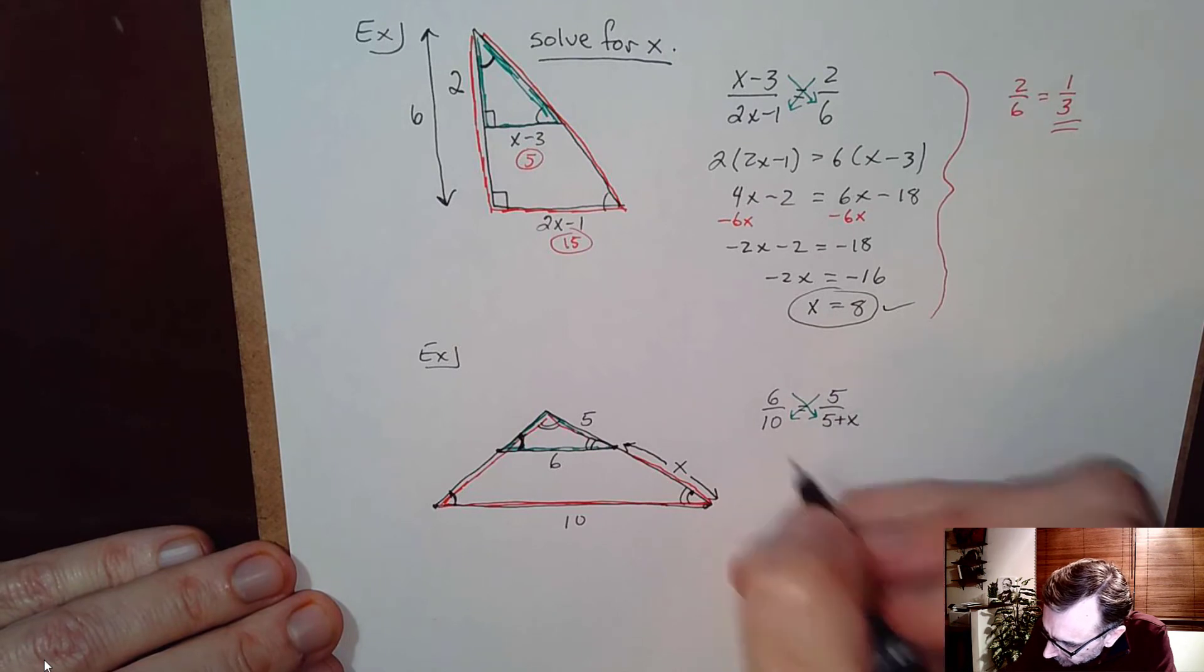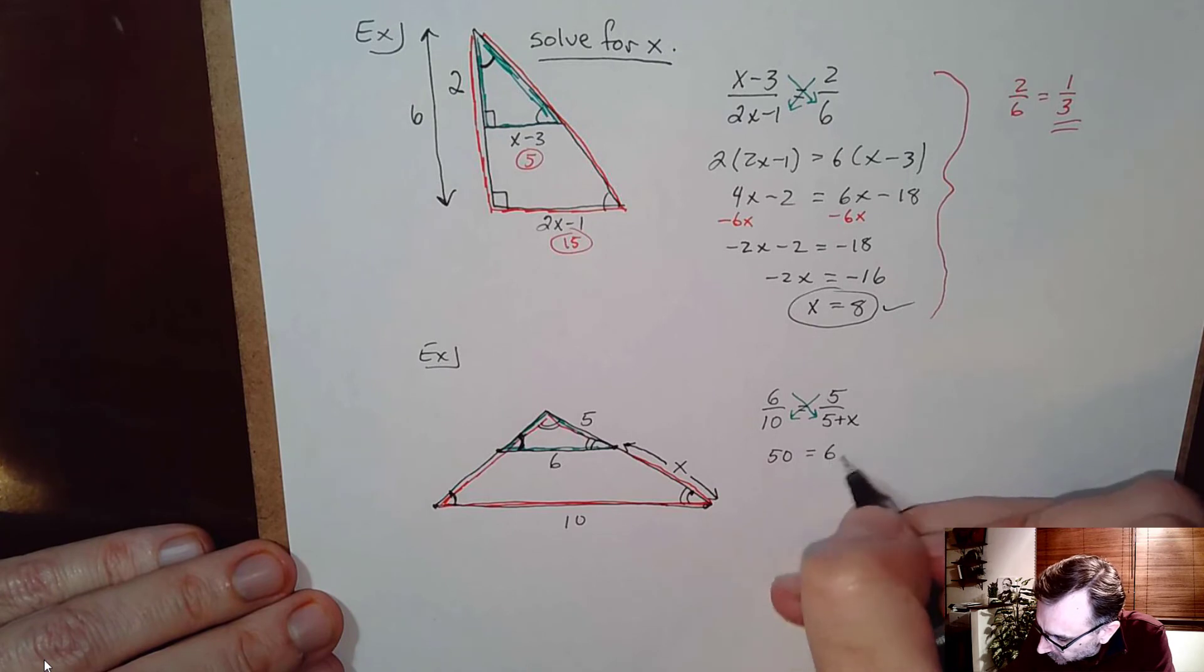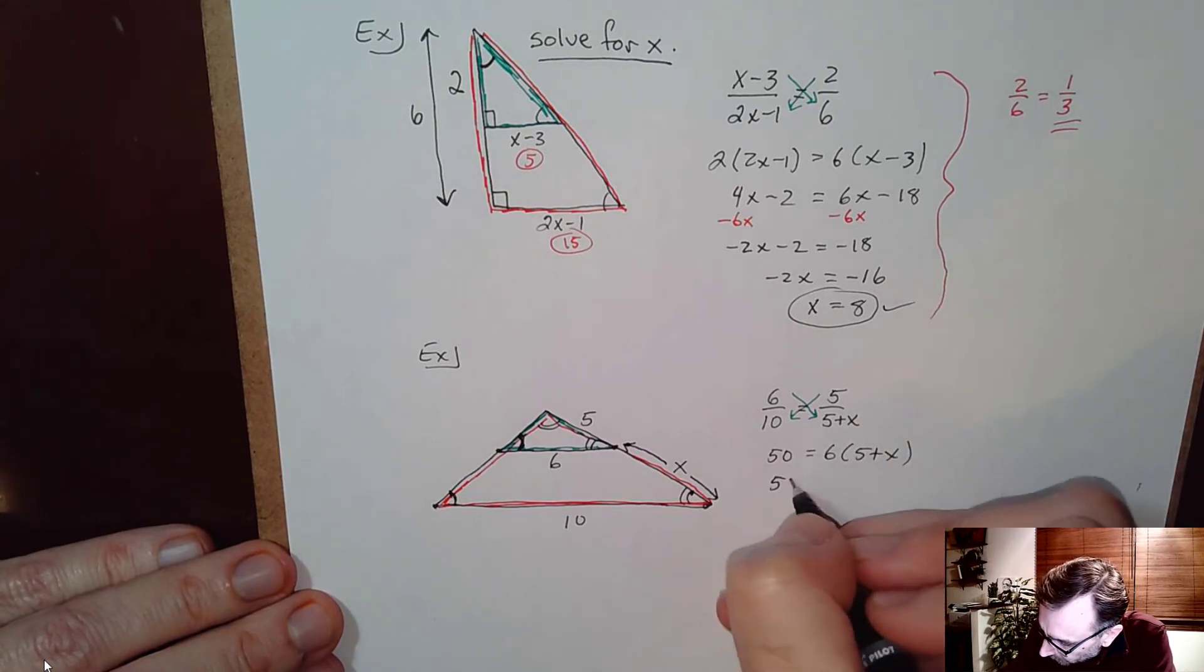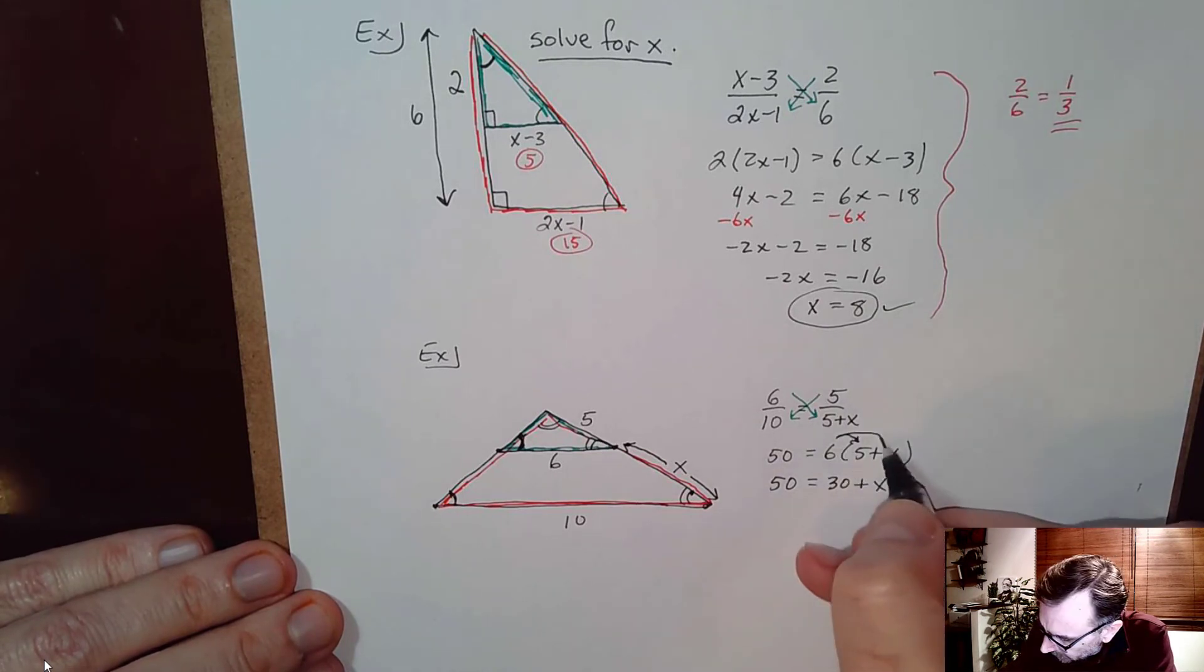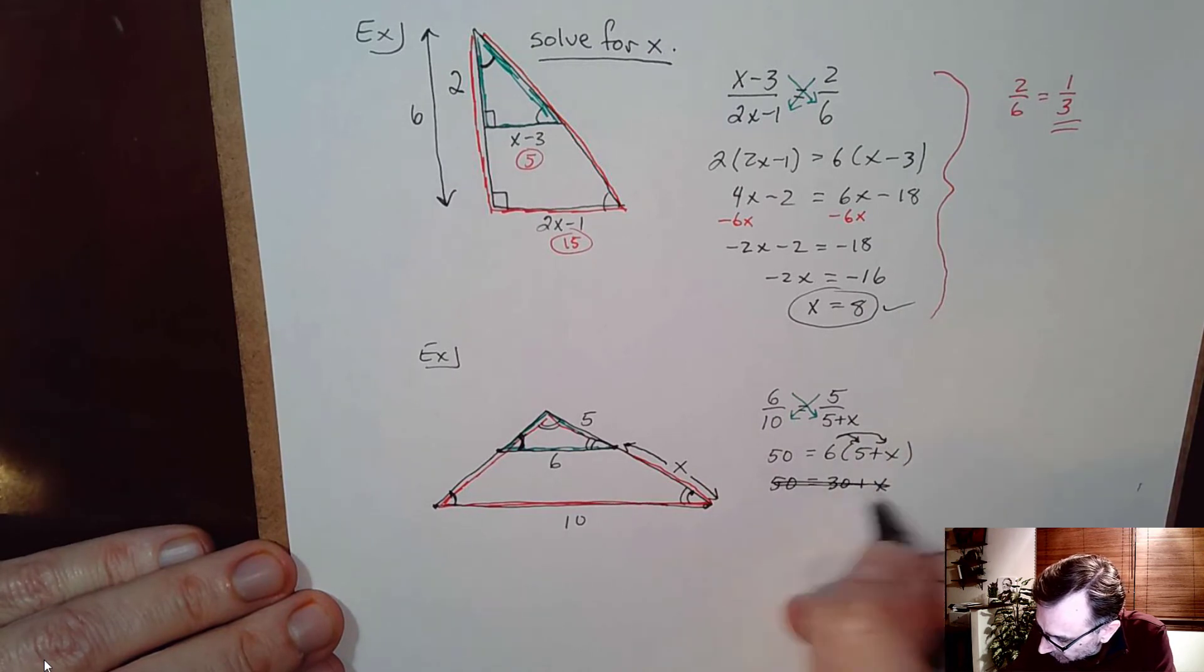So 5 times 10 is 50. And that's going to be equal to 6 times 5 plus X. Distributing 50 equals 30 plus X. And then plus 6X. So a little bit of a mistake there. 50 equals 30 plus 6X. Sorry about that.